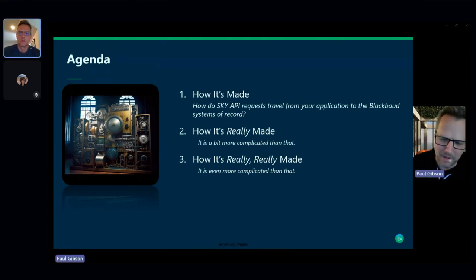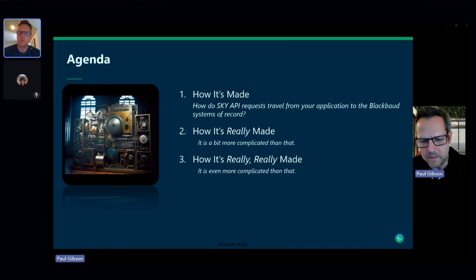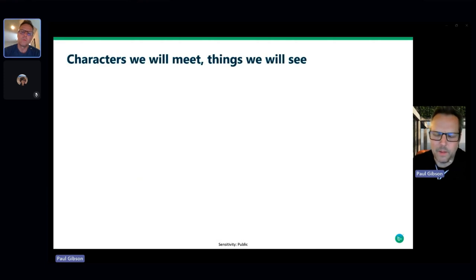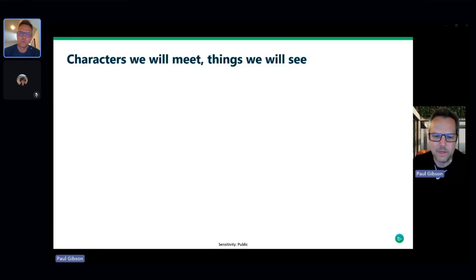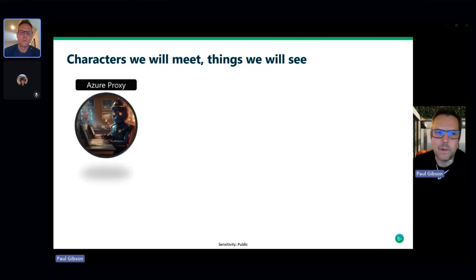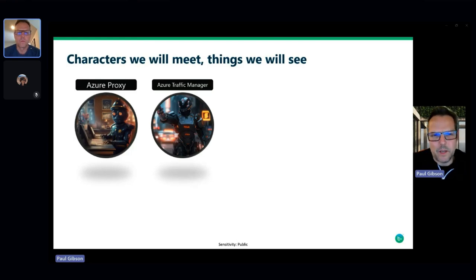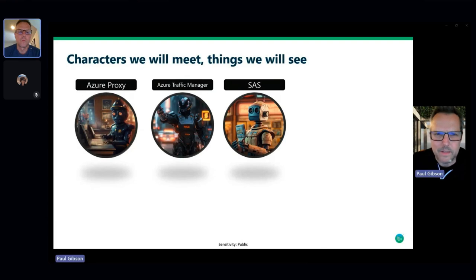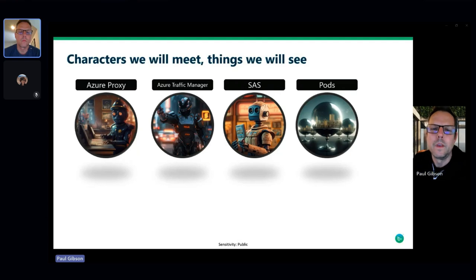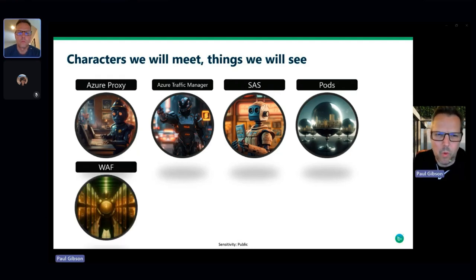It turns out it's quite a complex process. After we see how it's made, we're going to drill in further, because we build abstraction on top of abstraction to try and keep things simple. Today you're going to see increasing complexity. I've created a few indicator characters to help us keep track of what's going on, just like the TV show gives you a little preview of what's to come.